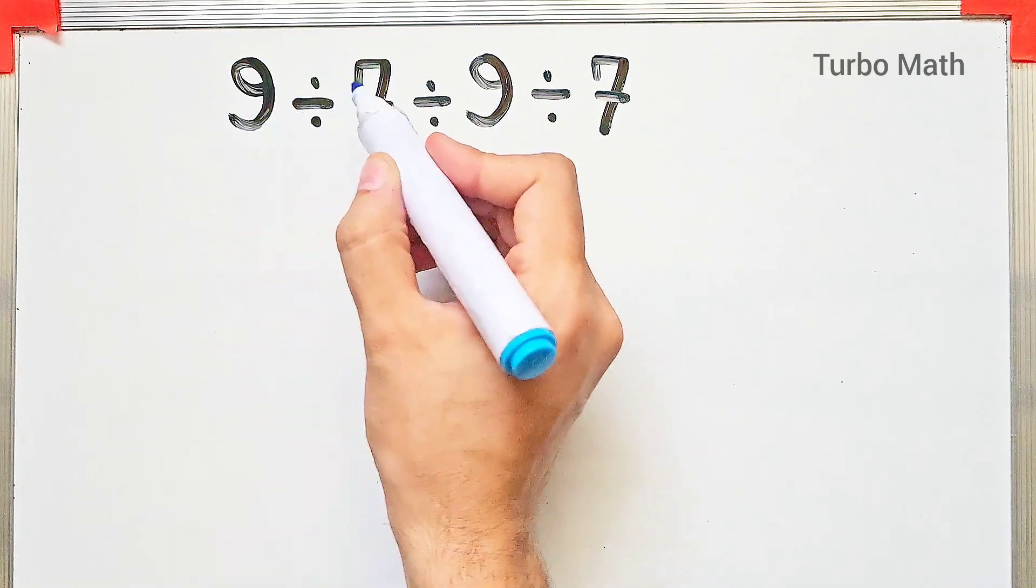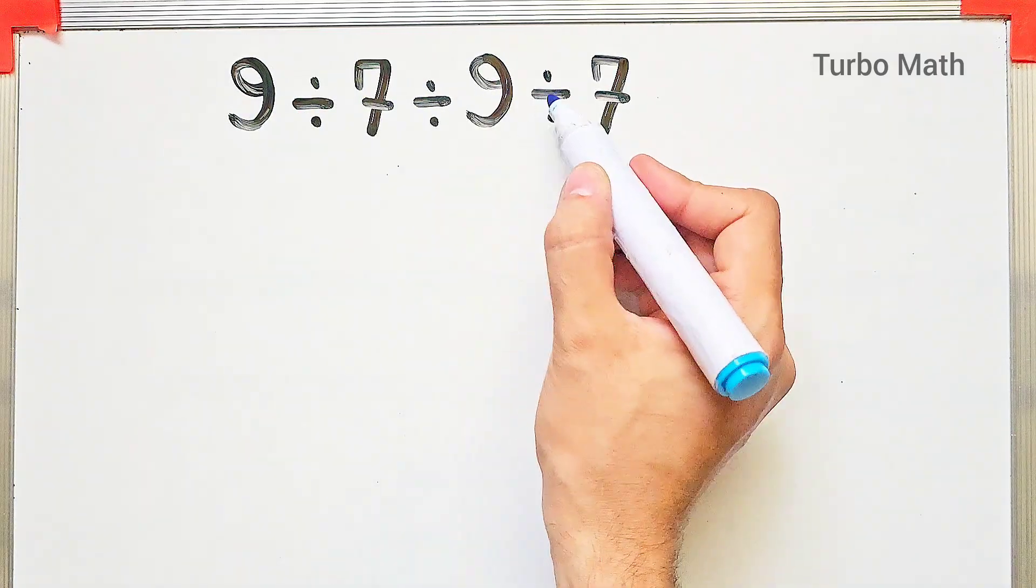9 divided by 7, then divided by 9, then divided by 7. What is the answer of this question?